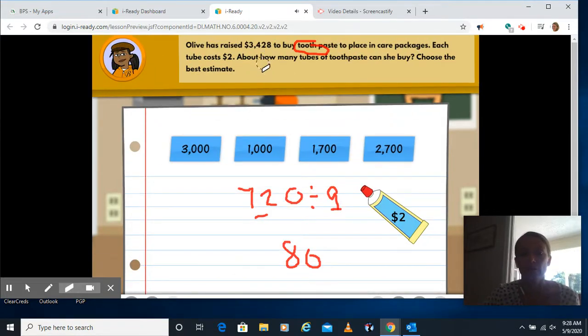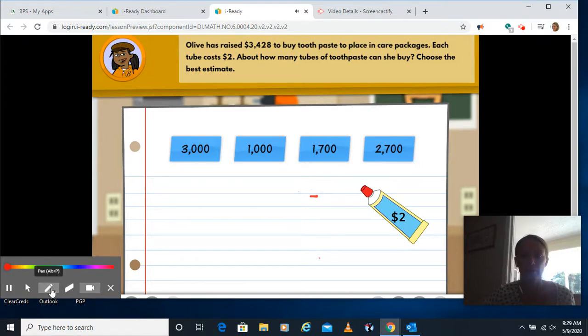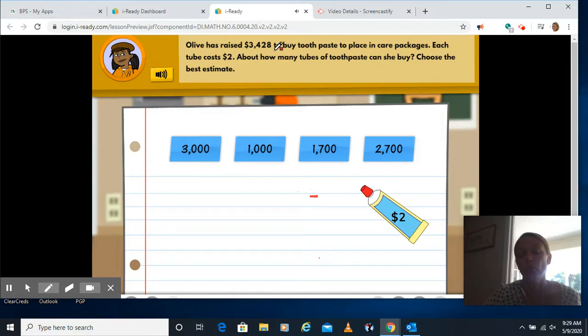Olivia raised $3,428 to buy toothpaste to put in care packages. Each tube costs $2. About how many tubes of toothpaste can she buy? Choose the best estimate. Well, I'm going to round 3,428 to 3,500.